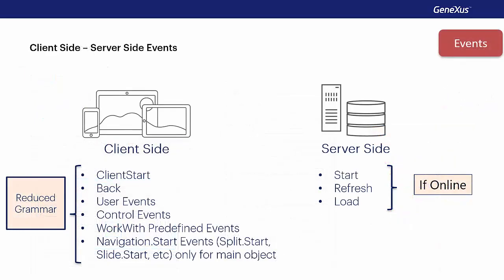We've seen the events executed on the client side and those executed on the server side. It's important to tell them apart, because what we can program in client events abides by a grammar that's a little more reduced than what we can do on the server — something we'll see in another video. This will not have any effects on the implementation of an offline application, meaning that in terms of grammar, you may program events in the same manner regardless of whether your application is online or offline — it's transparent in that sense. In the following video, we'll continue to study the navigation and determination of the base table in objects for smart devices.